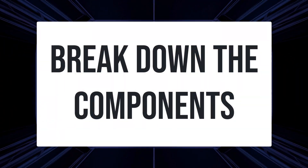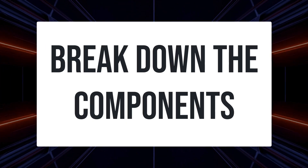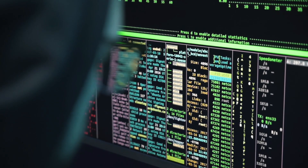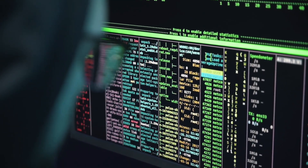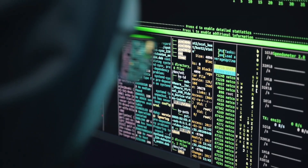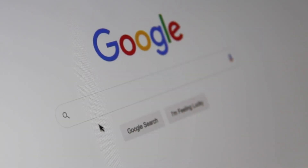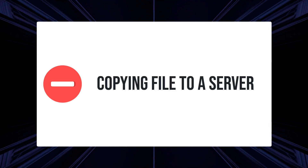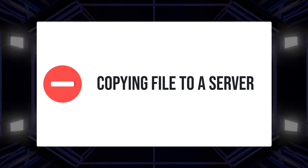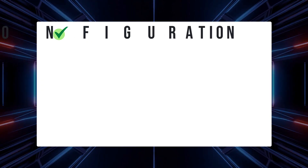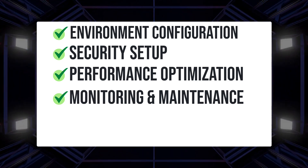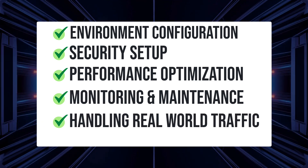When we deploy an application, we're essentially moving our code from a local environment to a production environment, setting up all the necessary infrastructure like databases, web servers, networking, and so on. Configuring the environment so our application runs smoothly, and making it accessible through a domain name instead of localhost. Deployment is not just copying files to a server — it's a complete process that includes environment configuration, security setup, performance optimization, monitoring and maintenance, and ensuring your application can handle real-world traffic.